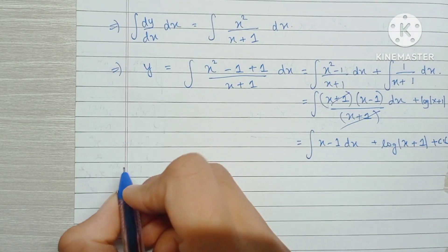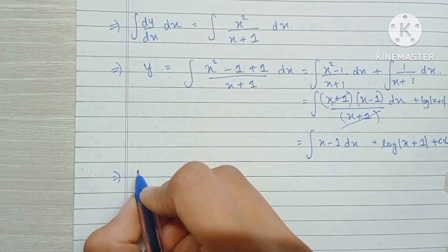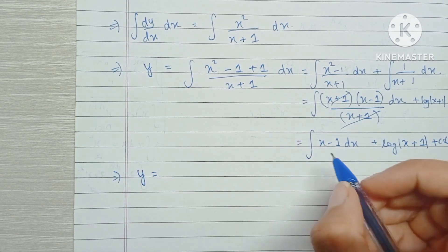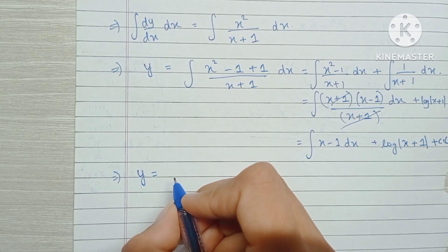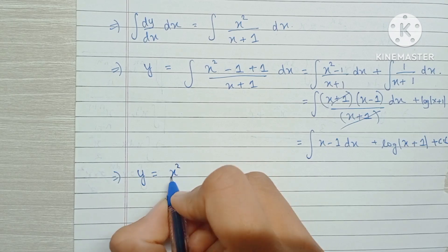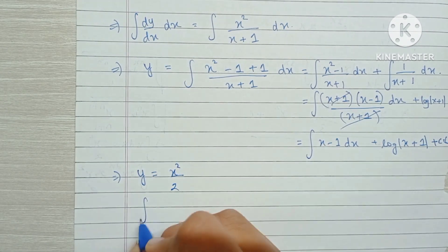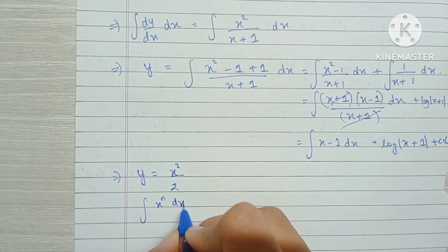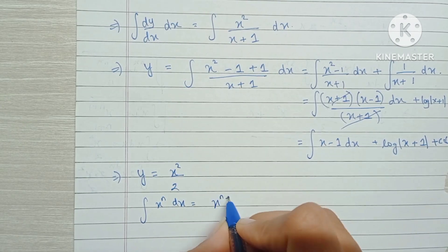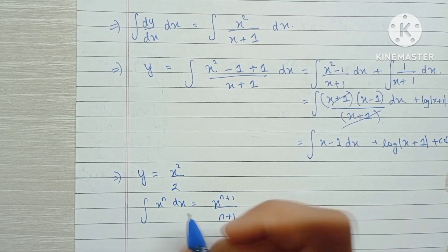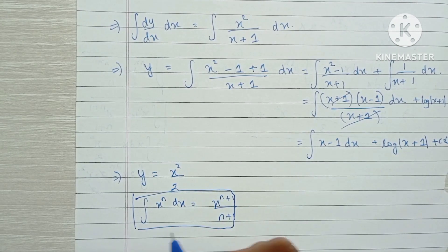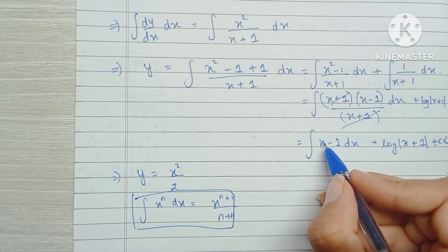Alright, let's just begin on a new line. So we have y is equal to, now the integral of x is x squared by 2. This is because we know the rule that the integration of x raised to n dx is equal to x raised to n plus 1 upon n plus 1. In our case n is 1 because it's just x.